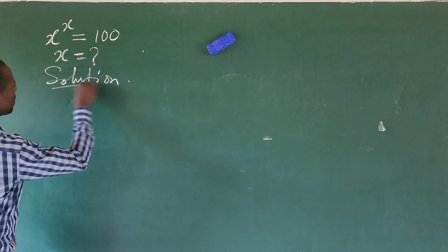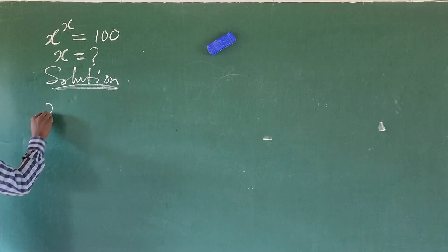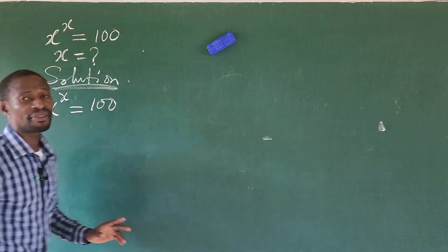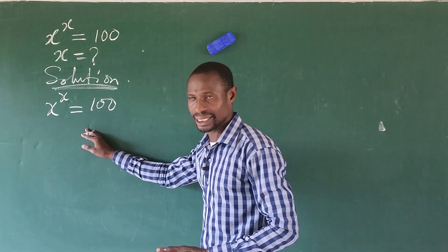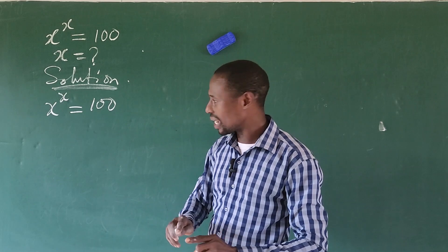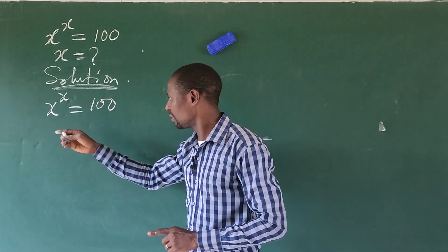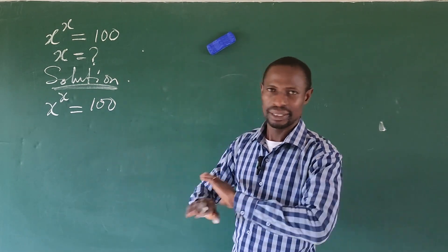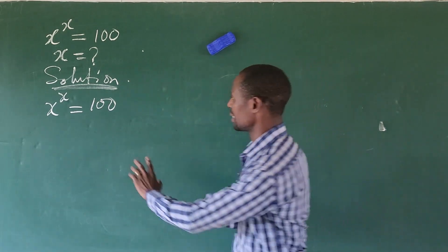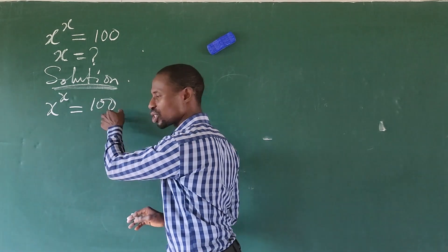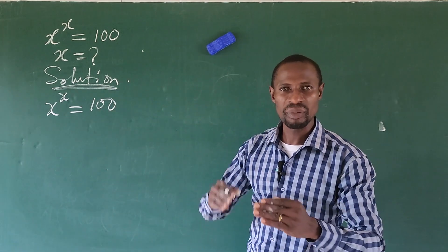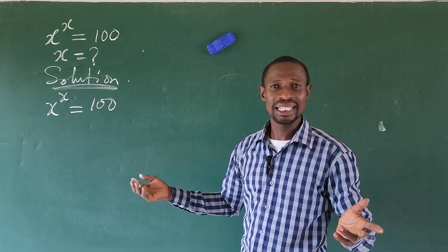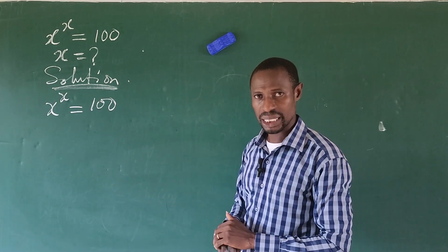Let's put down the question, which is x to the power of x equal to 100. Now, whenever you see a question of this kind, all you need to do is look for a number that you can raise to itself, then equate the exponents or the base to get your answer straightforward. But if you look at the number on the right hand side, which is 100, there is no number we can raise to itself to give us 100.